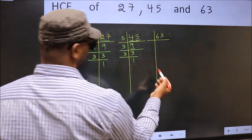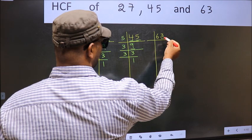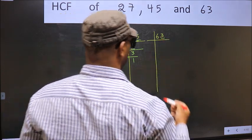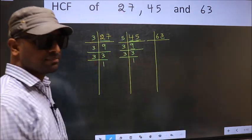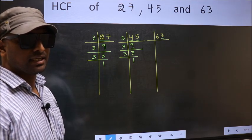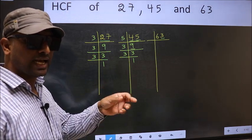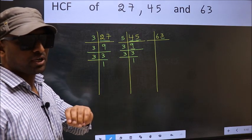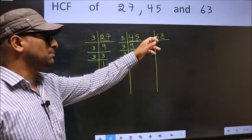Now the other number. Last digit 3, not even, so not divisible by 2. Next prime number 3. To check divisibility by 3, we should add the digits. What I mean is 6 plus 3.